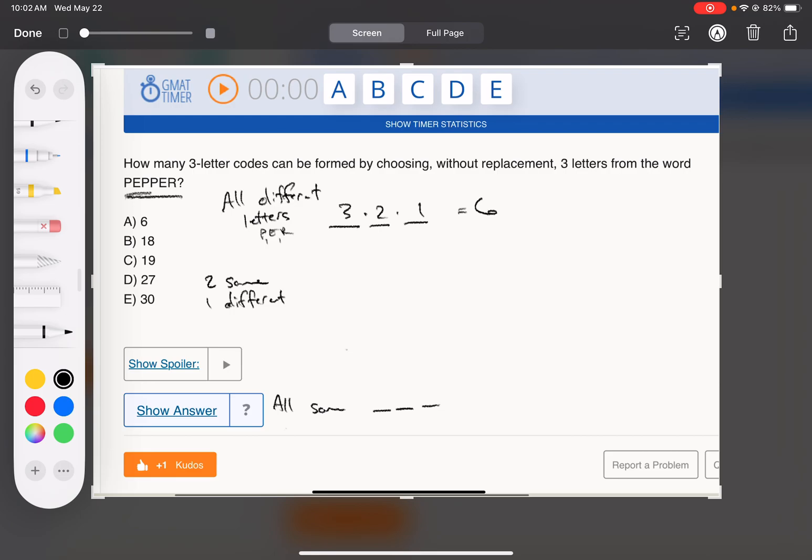When they're all the same, if you look at it, the only thing that works for that is when it's all P. So that's just one scenario there and six scenarios up top.